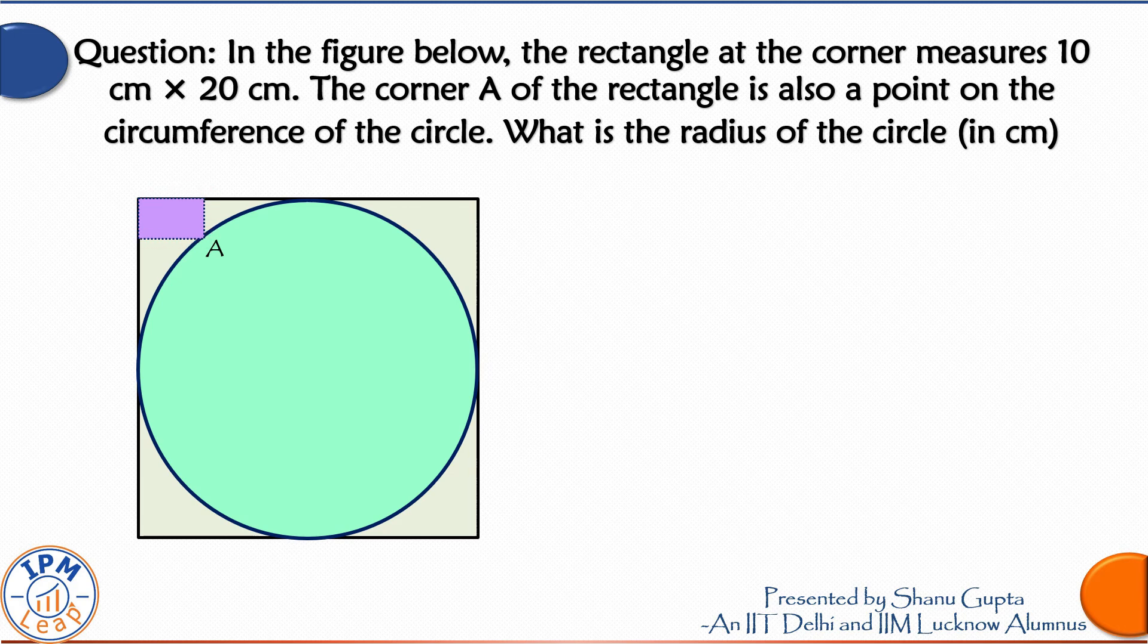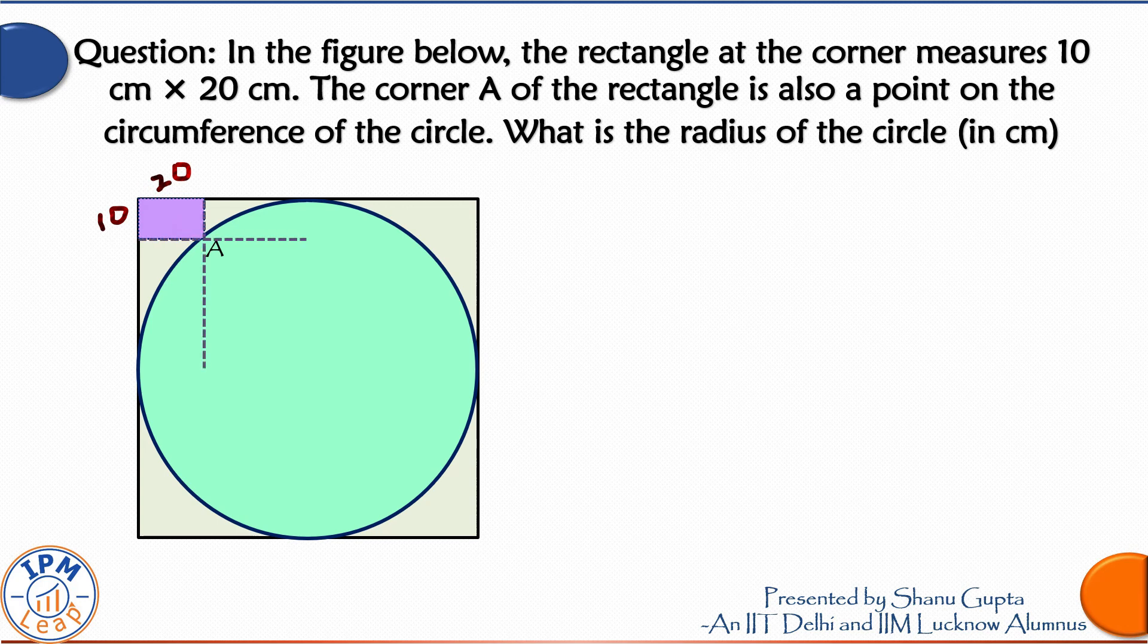So we know the question. Let's observe the corner rectangle carefully. The longer side is 20 centimeter and the shorter side is 10 centimeter. A simple trick to solve this question is to draw a horizontal and vertical line aligned to the sides of this rectangle. Both lines should pass through the corner of this rectangle, that is A.